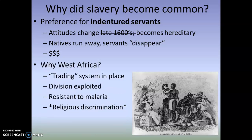The other question arises: why did West Africa become the region forced to provide this labor source? When it says 'trading system in place,' it was common for African tribes at war with each other — different tribes, different kingdoms — to keep prisoners of war as slaves. They would often sell them to Arab traders who would transport them in large camel caravans across the Sahara Desert. So there was a system already in place; it's just that instead of going east to the Mediterranean or north across the Sahara, they would now go west.